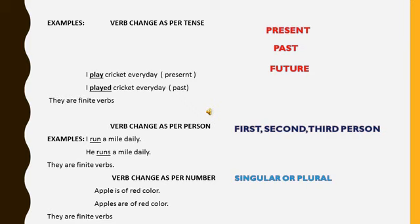So here are some examples. Number one: I play cricket everyday. So this is in present tense. When we change into past, it becomes played. I played cricket everyday. So this is past tense. So verb changes as per tense. So they are finite verbs.